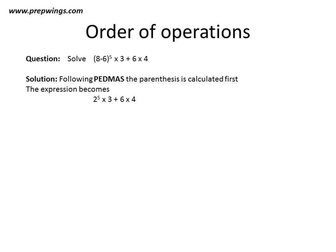Following PEDMAS, we will first solve the parenthesis. We have (8-6) in the bracket, which is a parenthesis. The expression then becomes 2^5 × 3 + 6 × 4.